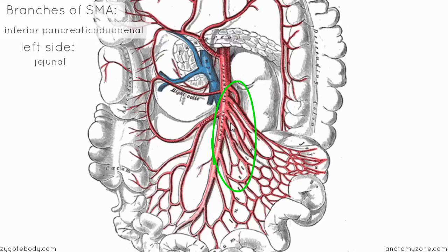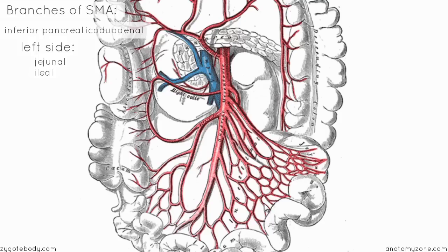On the left side of the SMA, you've got jejunal vessels and ileal vessels, and there are lots of these. You'll notice there are arches or arcades, which are anastomoses between these vessels — the vessels join together to form these arches. There are a few levels of these arcades. The small intestine is intraperitoneal, so the jejunal and ileal vessels pass between the two sheets of the mesentery to supply it. At the distal end, you've got straight vessels which supply the surface of the small intestine.